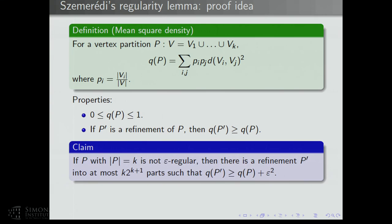There's something stronger you can show. The key claim for the proof of the regularity lemma is: if you have a partition with K parts and it's not epsilon-regular, then there's a refinement P' into at most an exponential number of parts such that the mean square density goes up by at least epsilon². Given this claim, the regularity lemma is pretty simple.